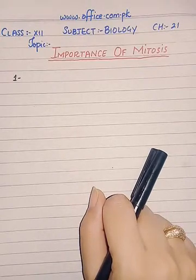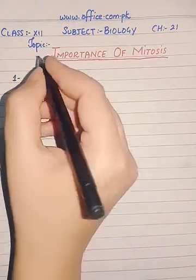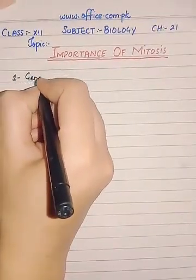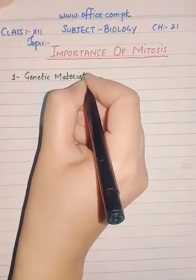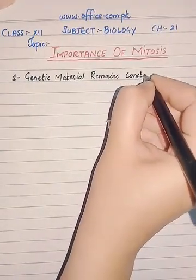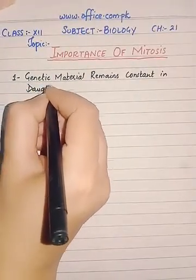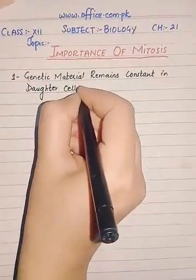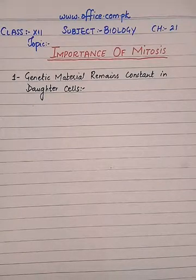The importance will be covered in the form of five points. Number one is: genetic material remains constant in daughter cells. This is the first point — genetic material will remain constant in daughter cells — because there is no crossing over or recombination.